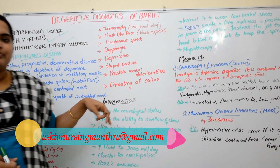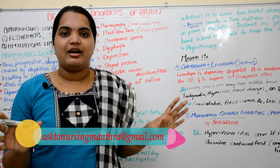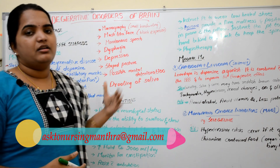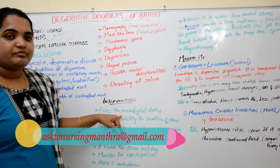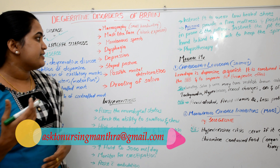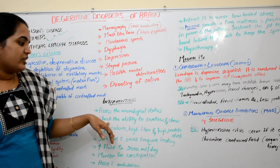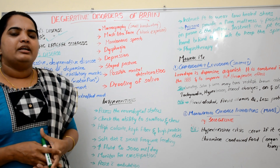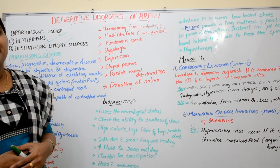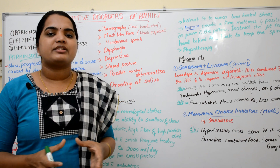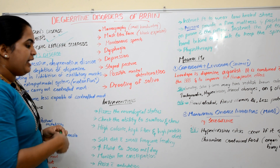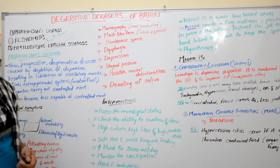For nursing interventions, first assess the neurological and mental status of the patient. Then check the ability to swallow and chew — this is very important. We cannot give food without checking the swallowing ability, gag reflex, and chewing ability, since all motor functions of the body are affected.